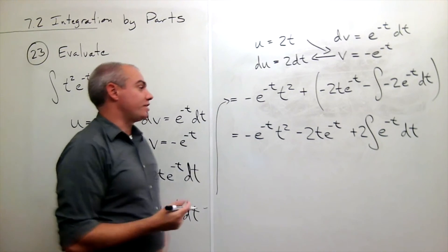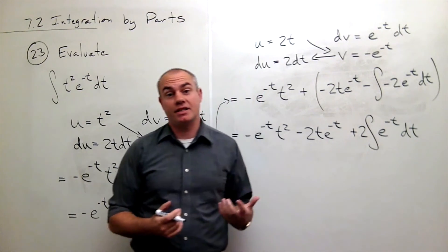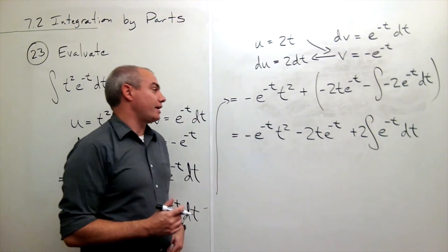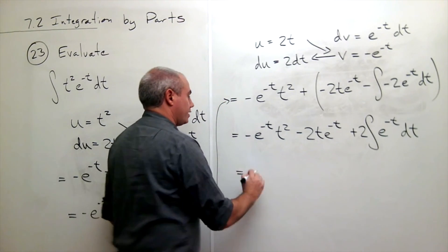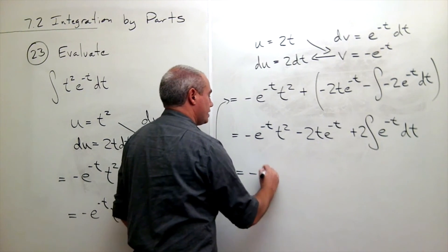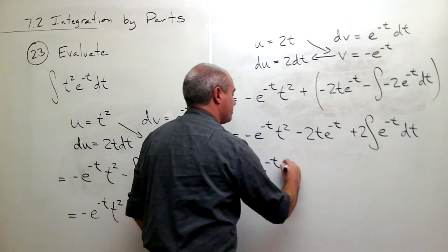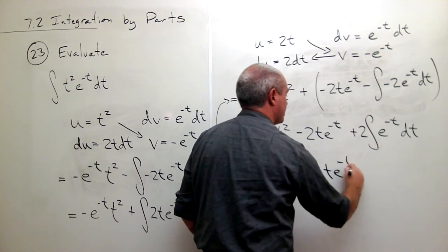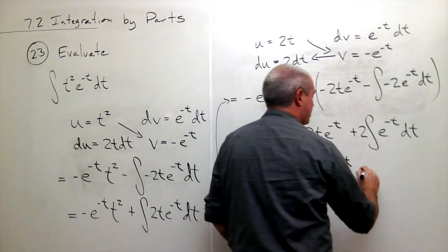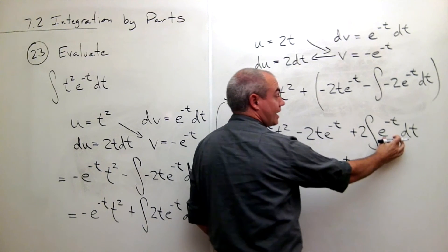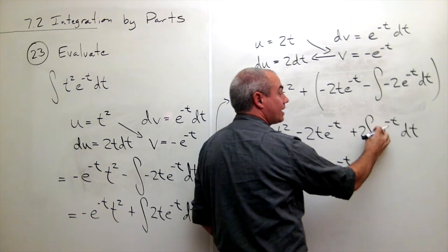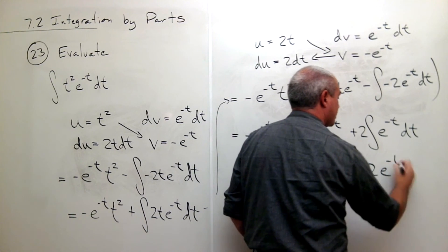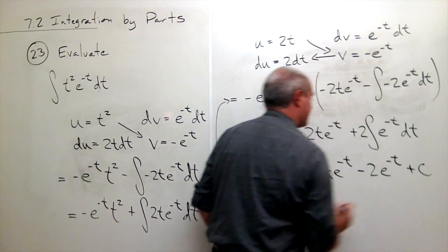Now I just have to take the antiderivative of e to the minus t, and I'm basically done. e to the minus t, we know that antiderivative, so we can just write it at this point. This is minus e to the minus t times t squared minus 2t e to the minus t plus, actually, when I take an antiderivative here, I get minus e to the minus t, so I'll just write minus 2e to the minus t plus c.